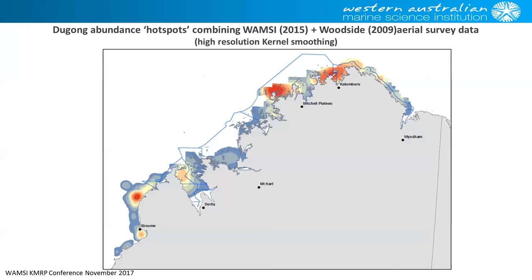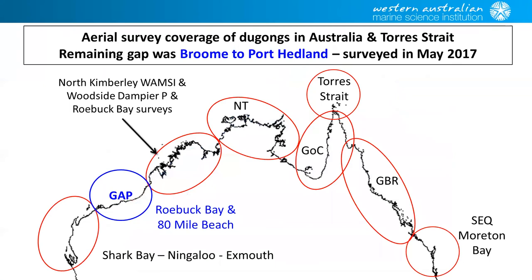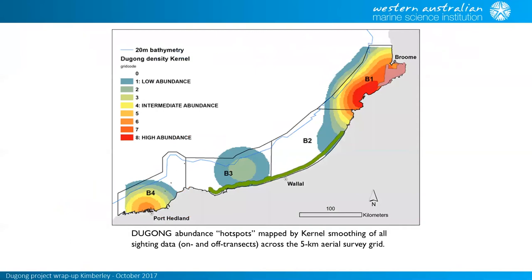There remained one survey gap — around Eighty Mile Beach — not covered by the WAMSI research project. The Department of Biodiversity Conservation and Attractions asked Pete to fill that gap, as it was relevant to joint managers of those marine park areas. Using the same methodology and some of the same people, surveys were undertaken from Roebuck Bay down to Eighty Mile Beach, with the resulting heat map showing unsurprisingly the highest densities around Roebuck Bay.